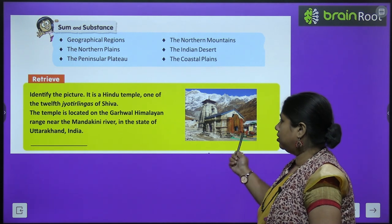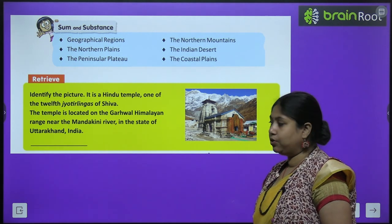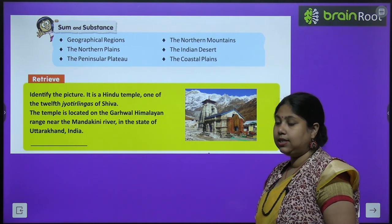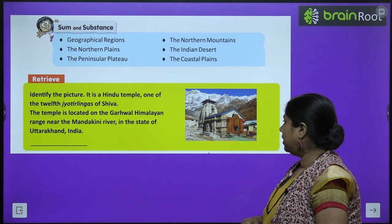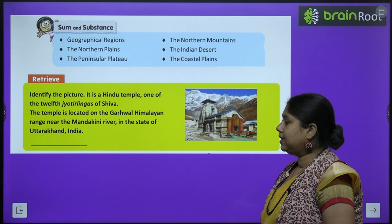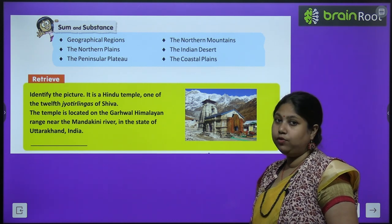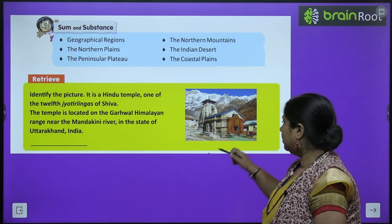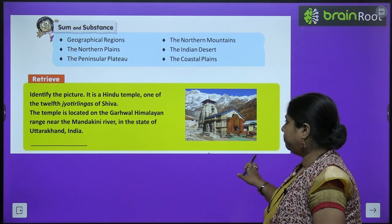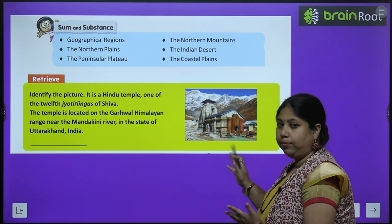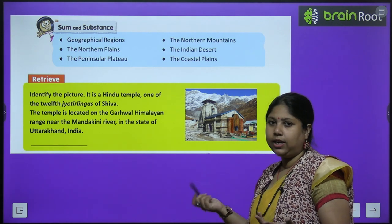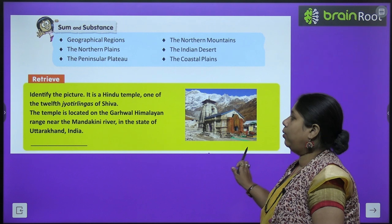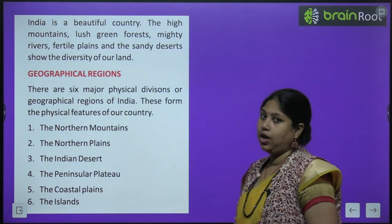This is the famous 12th Jyotirlinga of Shiva. This temple is located in the Garhwal Himalayan region, near the Mandakini river in the state of Uttarakhand. Yeh Kedarnath temple hai — yeh Kedarnath ka shrine hai. I hope many of you must have visited this place with your parents.